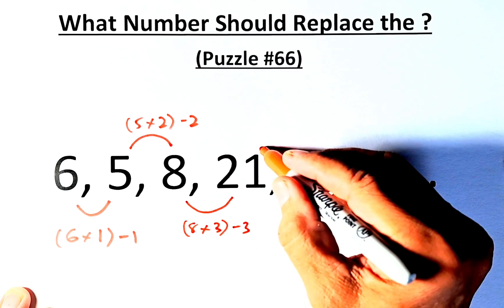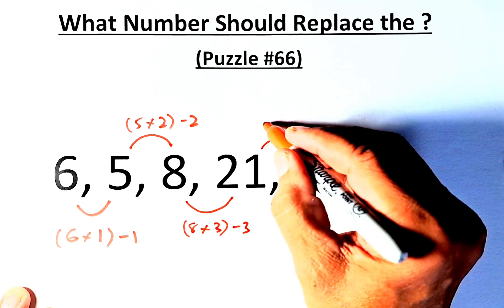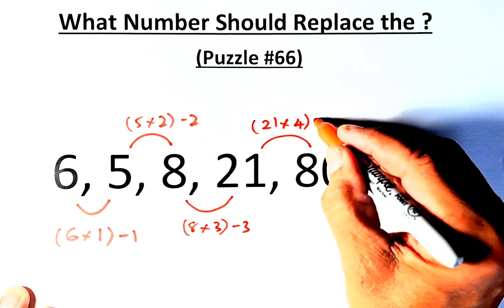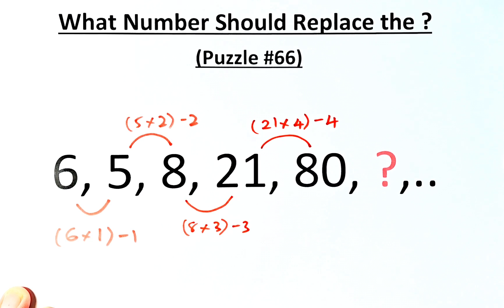And from 21 to 80, we are just going to take 21 times 4, which is 84 minus 4, that will give us 80.